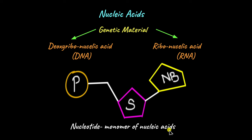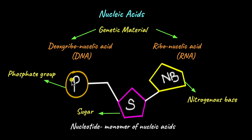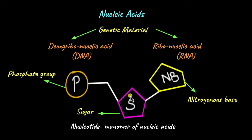Nucleotides are the monomers of nucleic acids. Each nucleotide, be it in DNA or RNA, is made up of three structures: a phosphate group, which is attached to a pentose sugar — pentose because it is made up of five carbons — and that is in turn attached to a nitrogenous base, a nitrogenous base because it has nitrogen-containing functional groups.